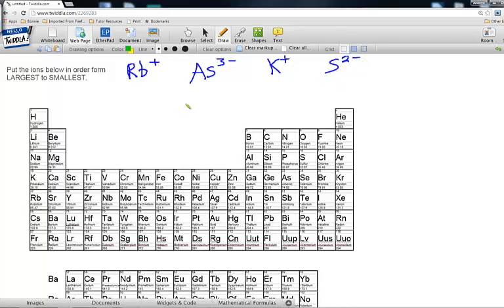Choosing the largest from the smallest and ordering these from largest to smallest is a tricky task. What we first want to look at is how many electrons or what each of these ions is isoelectronic to. I'll demonstrate.